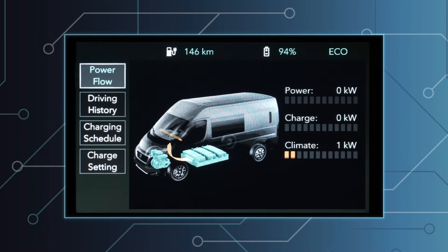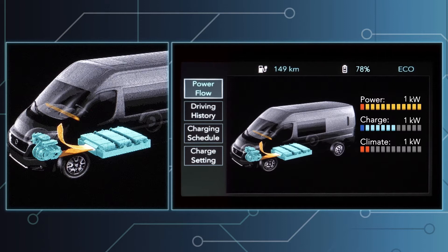Tap on the power flow menu in the middle of the screen to see information on energy flows. A dynamic animation shows the components involved and the flow direction. For instance, during acceleration, you can see an orange arrow pointing from the batteries towards the electric motor.